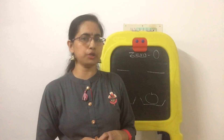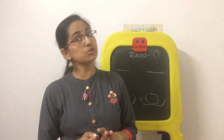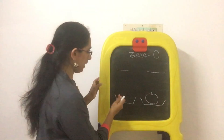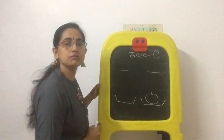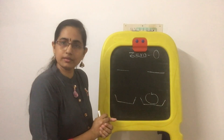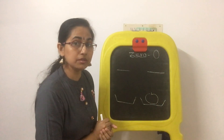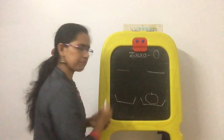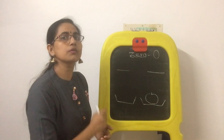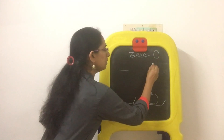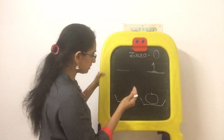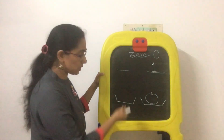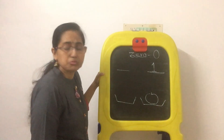Babies, today I'm going to introduce number zero. Just see the board — I have two baskets. This basket has nothing in it, and in the other one I have an apple. How many apples are there? Yes, you're right — number one apple. So I'm writing number one.